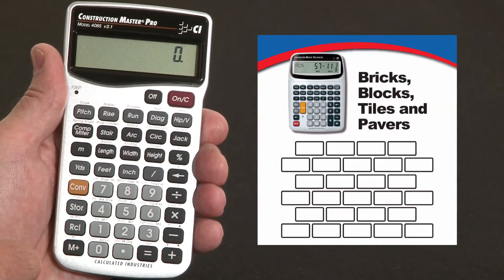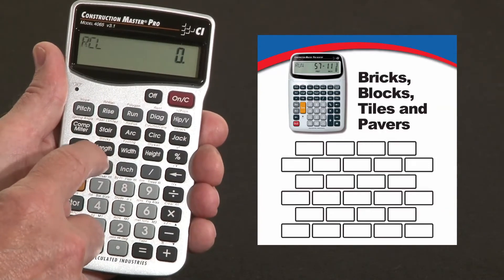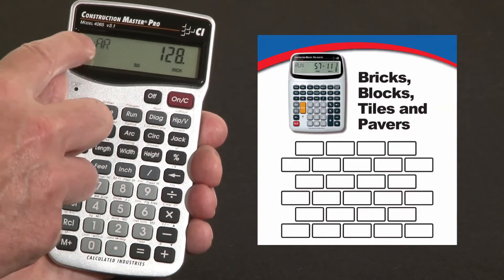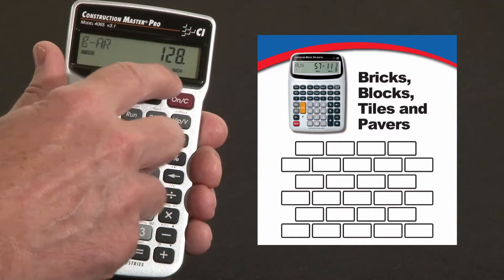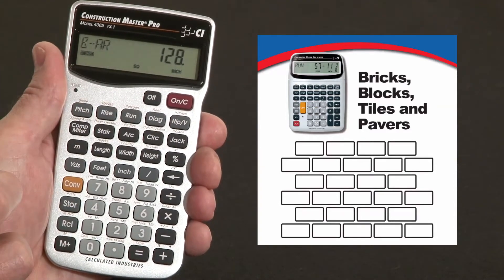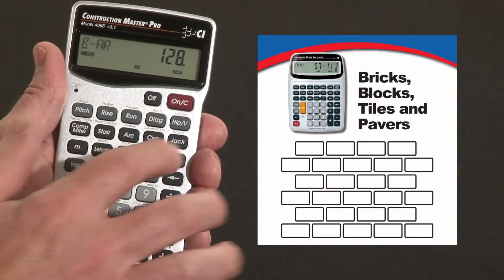The concrete block function is based on an 8x16 common concrete block. You can check that by hitting recall, and above the length key it says blocks. In this instance we're going to hit the 4 key because the block area says 128 square inches—that's the default size. You can change that to whatever you like, but for this example we're going to leave it as an 8x16 concrete block.